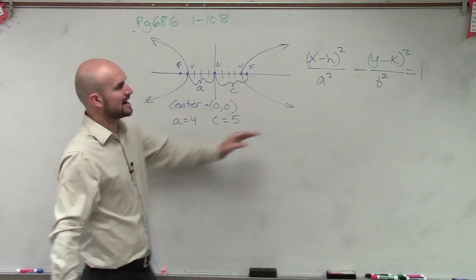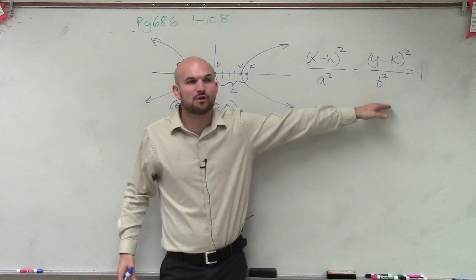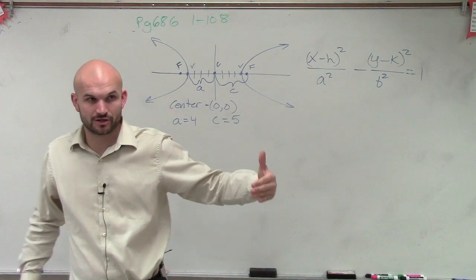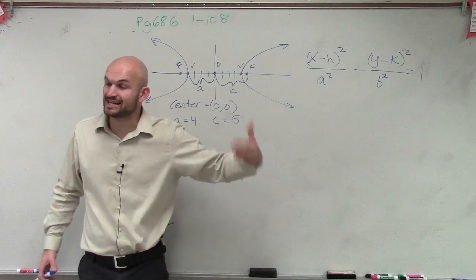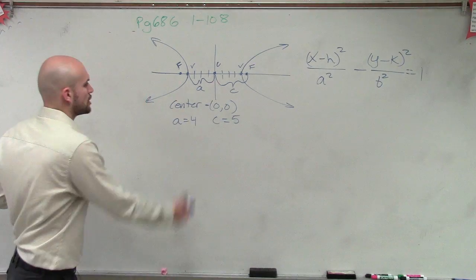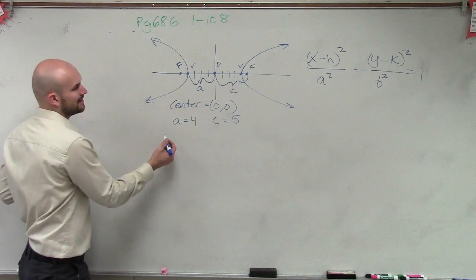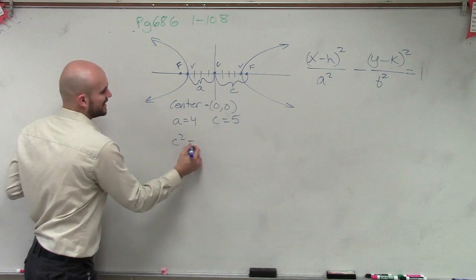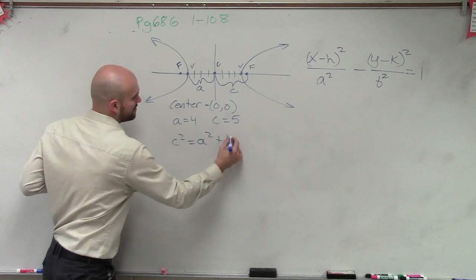So now, however, guys, our equation, we need to figure out what b squared is, right? So remember, a hyperbola has a special equation. Our relationship for a hyperbola was different for our ellipse. So our equation for a hyperbola is going to be c squared equals a squared plus b squared.